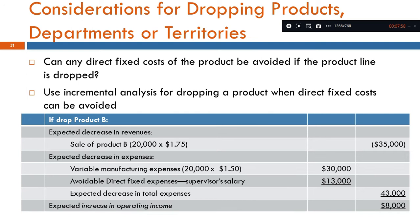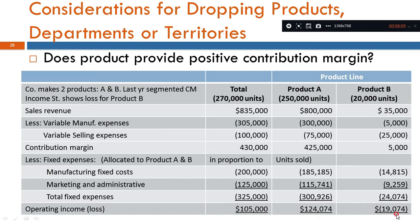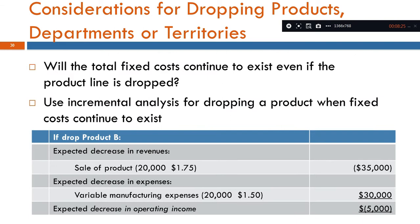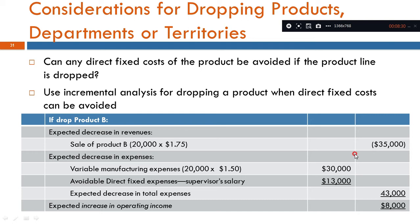Fixed costs continue to exist in some cases; in others, fixed costs can be avoided. The decrease in revenue when a product is dropped is a key figure. If we drop the product line, the sales decrease by the product's contribution. Fixed costs that cannot be avoided — those are the ones that stay regardless of the drop decision. The relevant figures are the ones that change as a result of the drop.